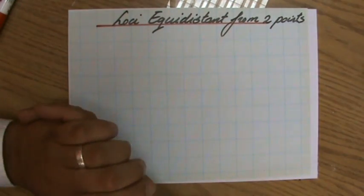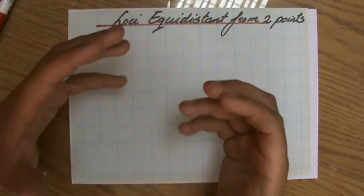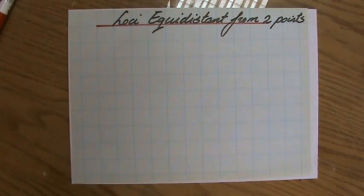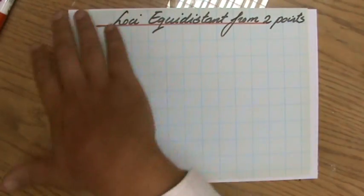So we're having a look together at loci, and loci are those points fitting a particular description. Where loci is plural, locus is singular. Loci are all the points fitting a description.